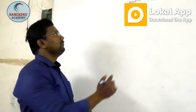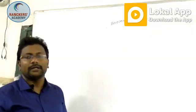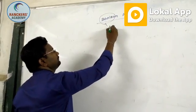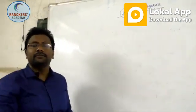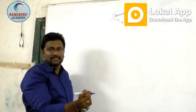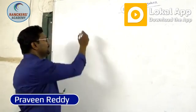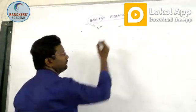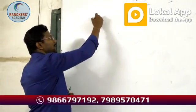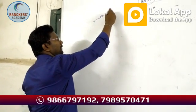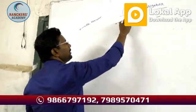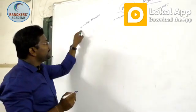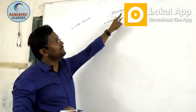Today's topic is Boolean algebra. Booley is a scientist who invented some formulas based on three different operators: one is plus, two is dot, three is bar. The plus is the OR operator, dot is the AND operator, and bar is called the NOT operator. These three form the basis of Boolean algebra.